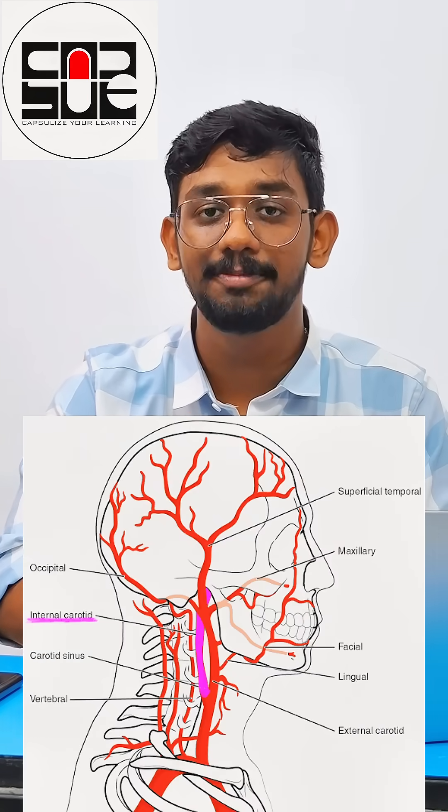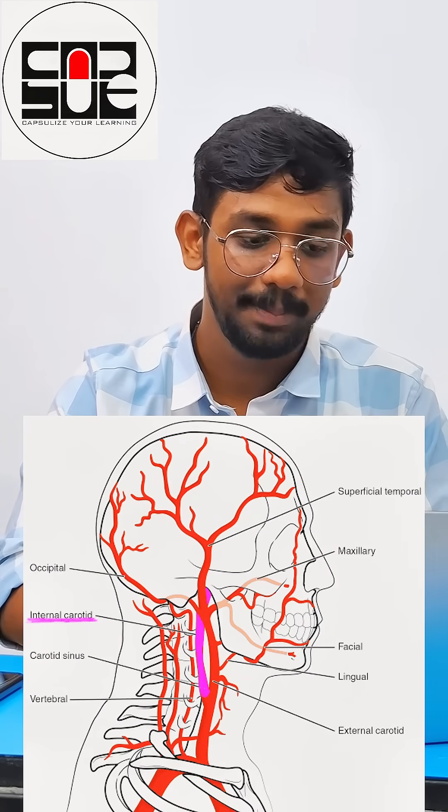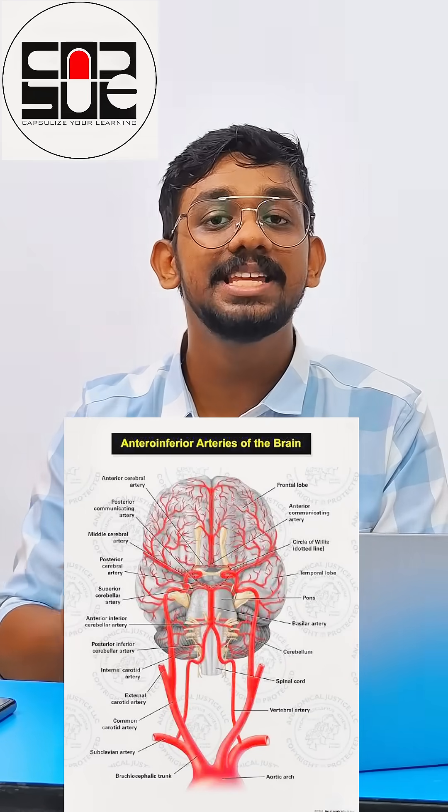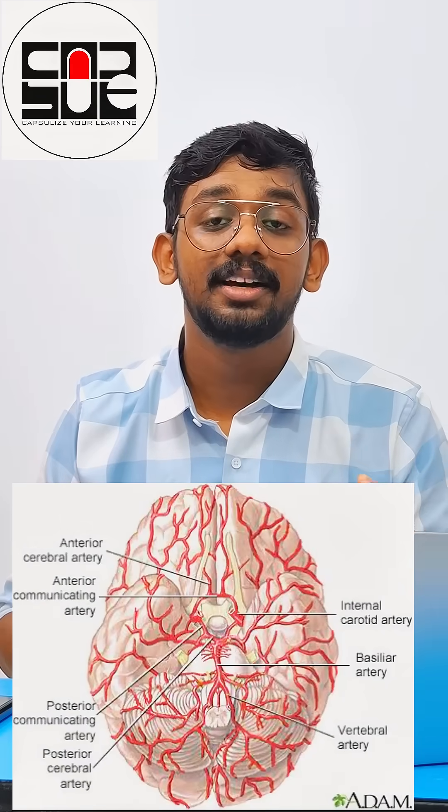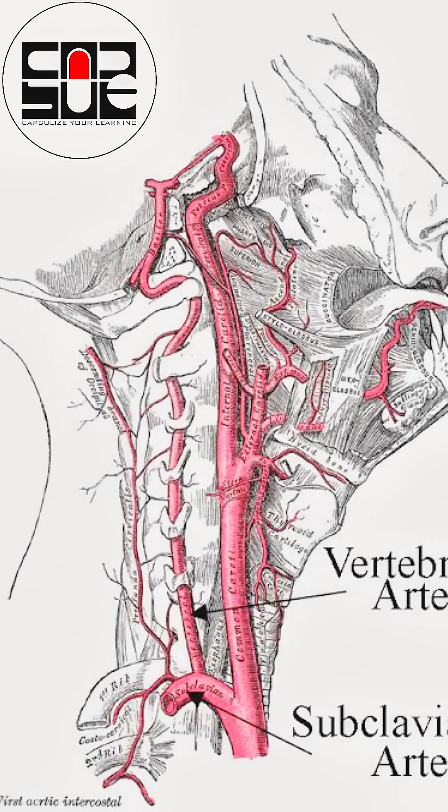Coming to the blood supply of the brain — it is very important because no blood flow means brain cells die within minutes. There are two key systems of blood supply to the brain. One is the carotid system, which comes from the front of the neck and supplies the front side of the brain. The vertebral system gives blood supply to the brainstem and cerebellum.